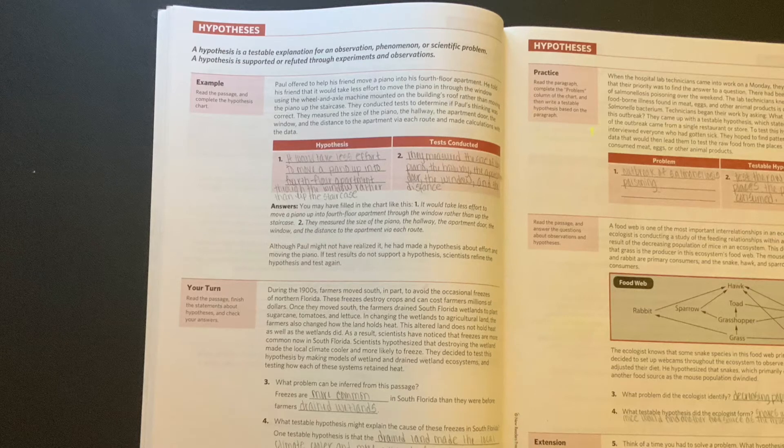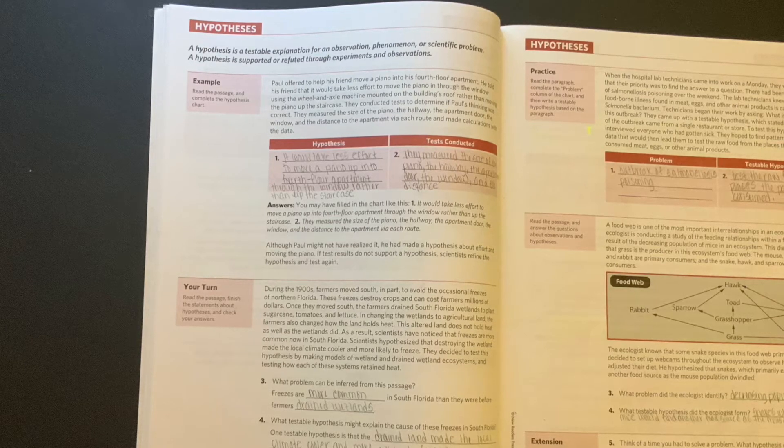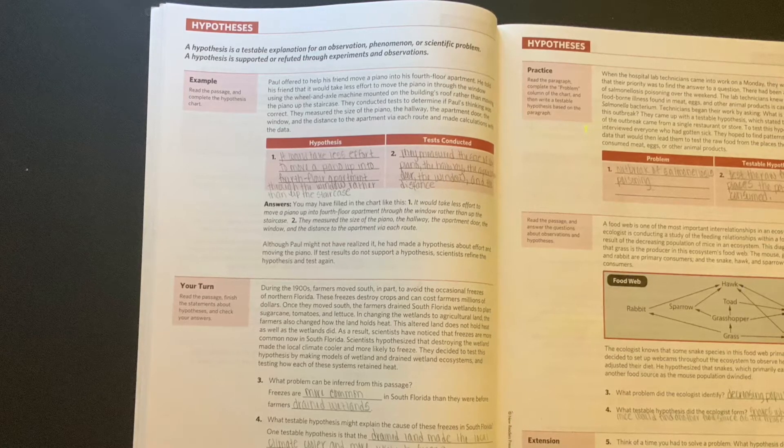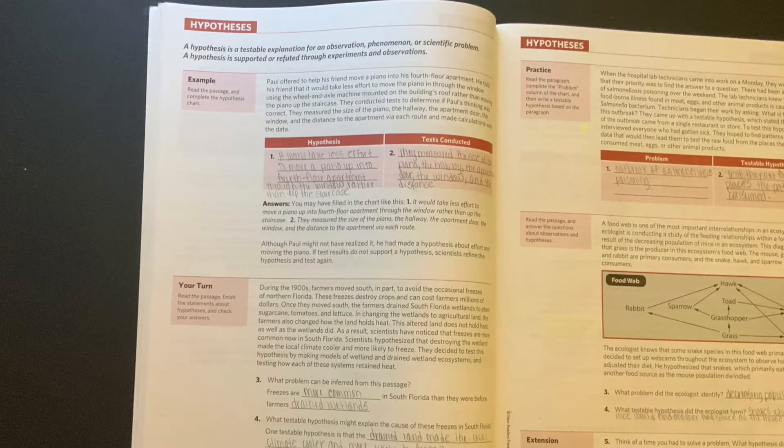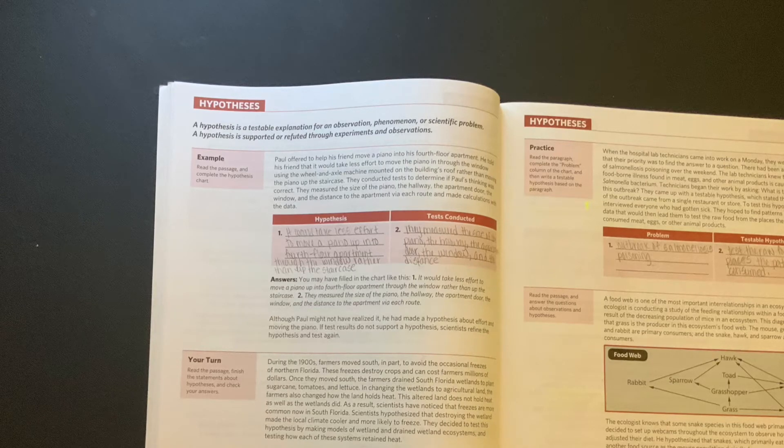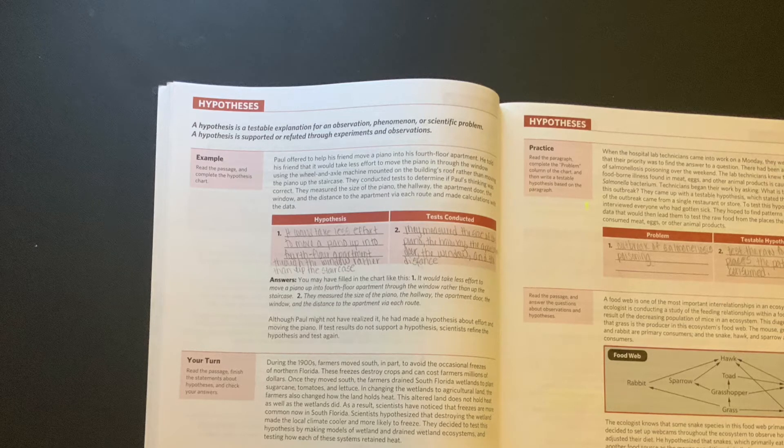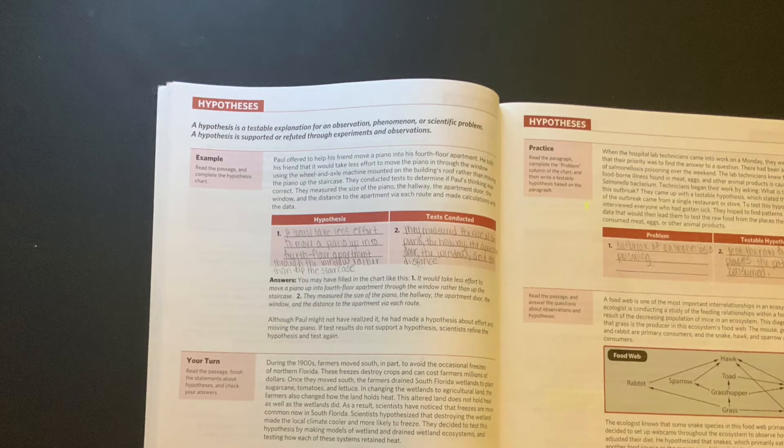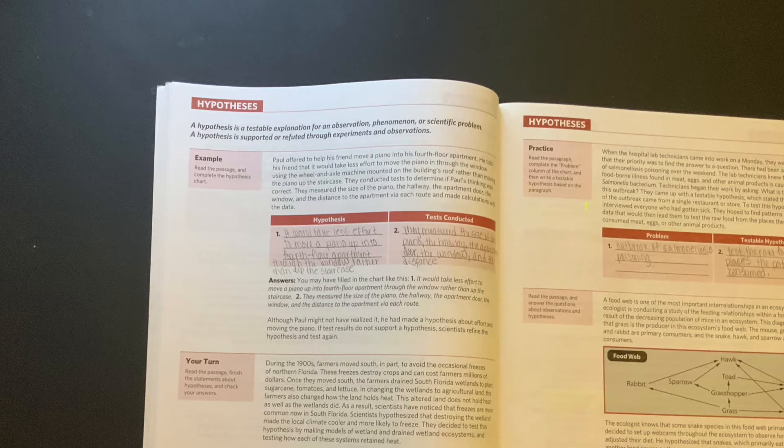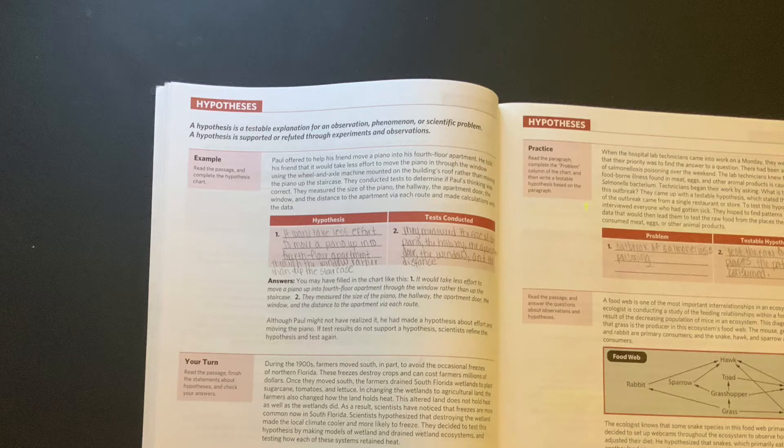Okay, so let's get into the next passage. During the 1900s, farmers moved south in part to avoid the occasional freezes of northern Florida. These freezes destroy crops and can cost farmers millions of dollars. Once they moved south, the farmers drained south Florida wetlands to plant sugarcane, tomatoes, and lettuce. In changing the wetlands to agricultural land, the farmers also changed how the land holds heat. This altered land does not hold heat as well as the wetlands did. As a result, scientists have noticed that freezes are more common now in south Florida.